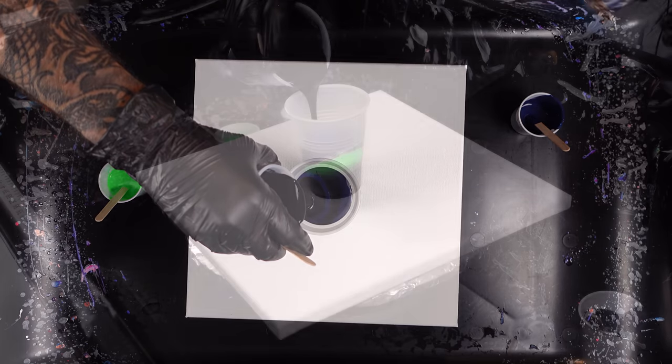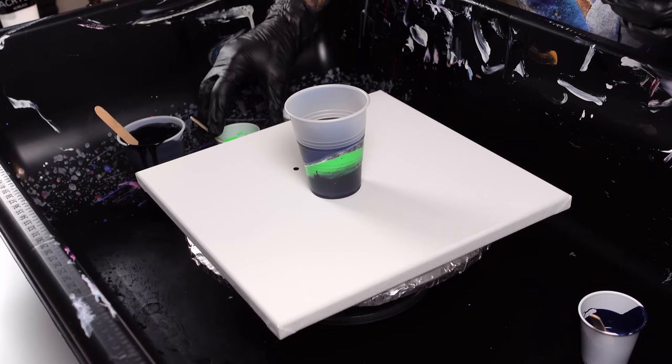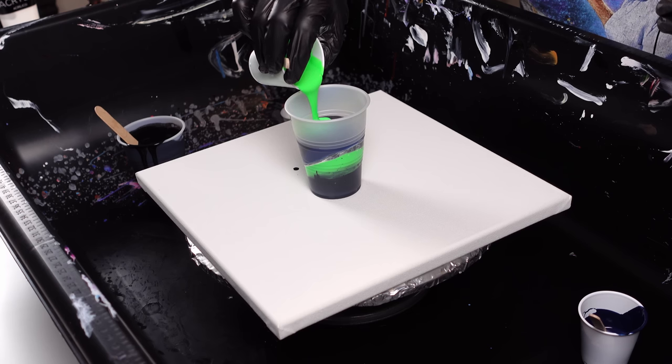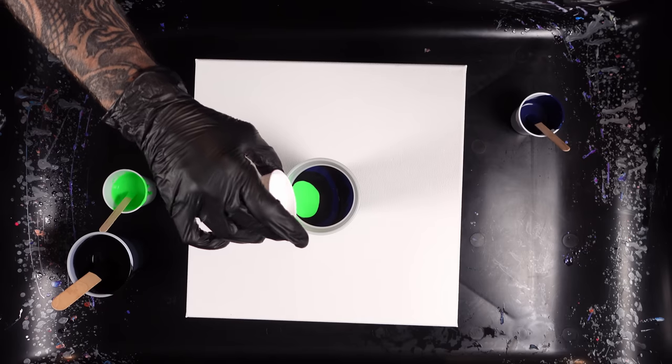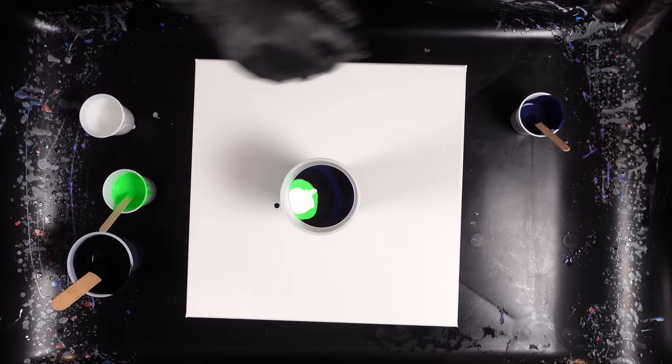But yeah, I'm just layering these colors. I am adding white in certain parts where I'm adding the other colors, the fluorescent green and the Prussian blue, just to see if I can get that white to kind of incorporate with those colors when they flow out of the cup. That's what I'm hoping for.